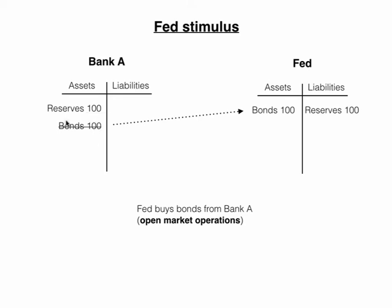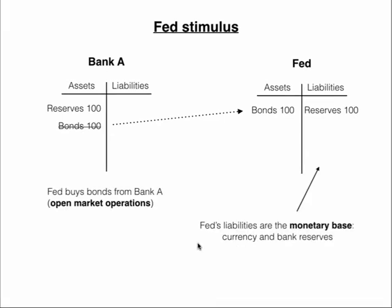These reserves are an asset for the bank. The bank now has these extra reserves, and corresponding to that asset, it's considered a liability of the Fed. This is a strange sort of liability — the Fed just creates these liabilities, these reserves, out of nothing. And the liabilities of the Fed are considered the monetary base, which is made up of currency and bank reserves.